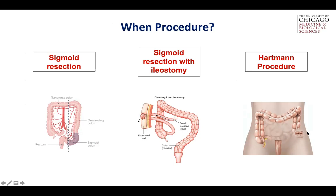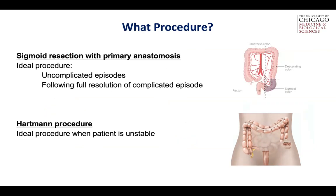The easy scenarios first. For the patient who had uncomplicated episodes or a complicated episode that fully resolved, the ideal procedure is sigmoid resection with primary anastomosis — they get their operation, they heal, they're essentially cured of their disease. The other easy scenario is the patient who comes into the emergency room hypotensive, tachycardic, peritonitic, possibly on vasopressors. The goal of that operation is to get rid of their sepsis, take out the sigmoid, get them off the table — give them a Hartmann's procedure with end colostomy and come to fight another day.